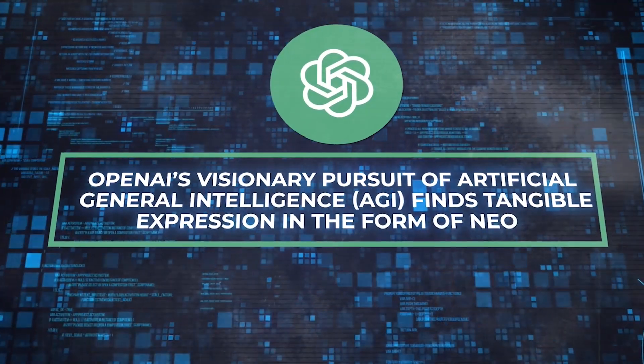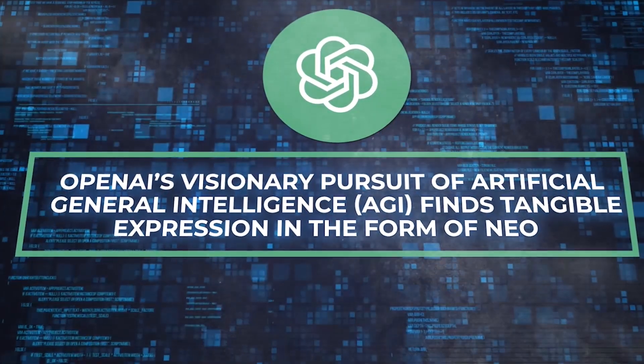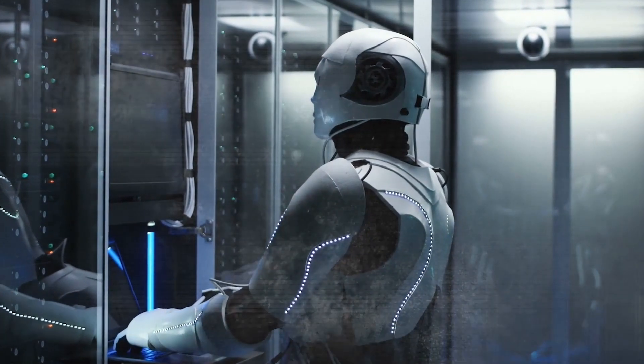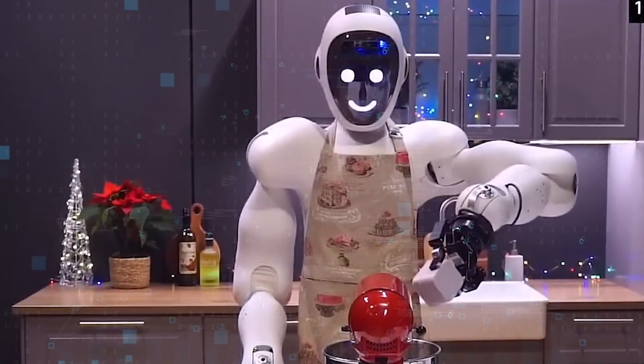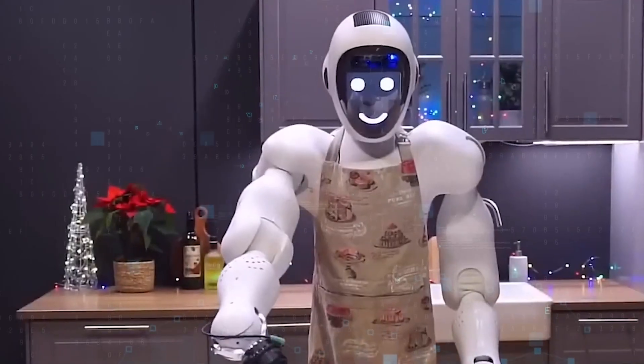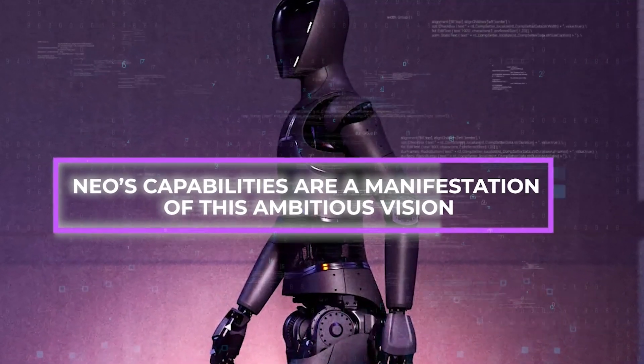OpenAI's visionary pursuit of artificial general intelligence, or AGI, finds tangible expression in the form of NEO, a groundbreaking creation that showcases the convergence of AI and robotics. NEO stands as a testament to OpenAI's mission to develop machines capable of comprehending and executing a vast spectrum of tasks that mirror human intelligence. NEO's capabilities are a manifestation of this ambitious vision.